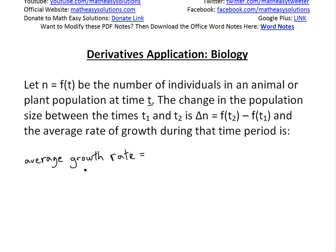The average rate of growth during that time period is Δn, or difference in the population during the time period, divided by Δt, whatever that time period is. And this could also be written as f(t₂) - f(t₁) all divided by t₂ - t₁.